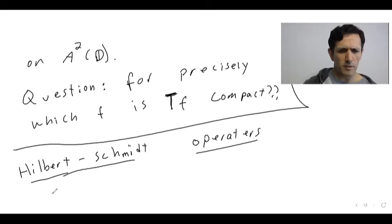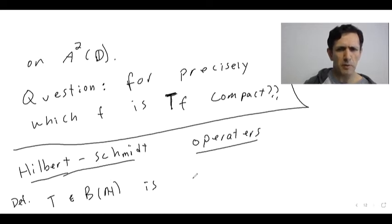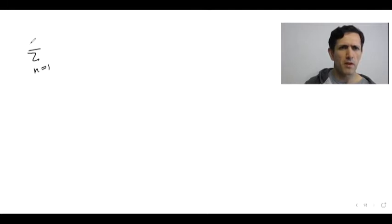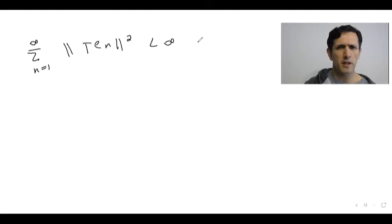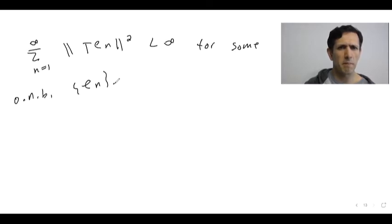So, definition: T is bounded on a separable Hilbert space. T is Hilbert-Schmidt if the following is true: if the sum of the norms of TEn squared is less than infinity for some orthonormal basis En.